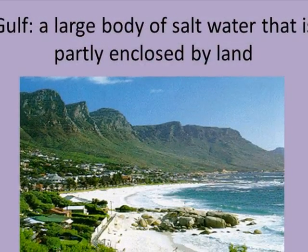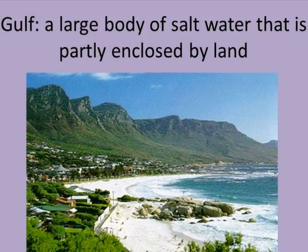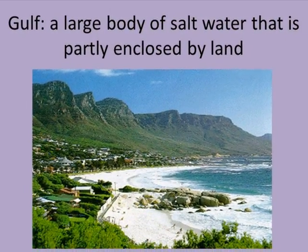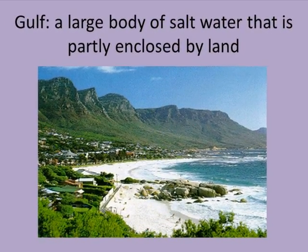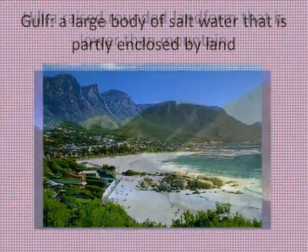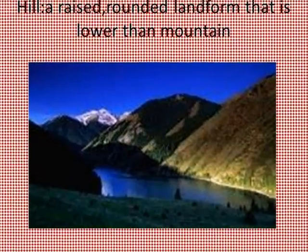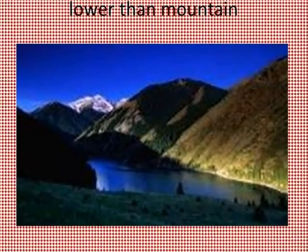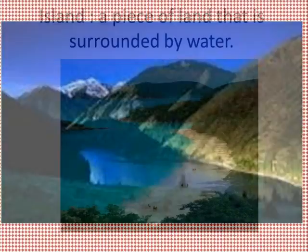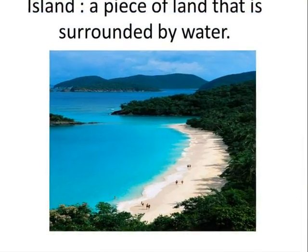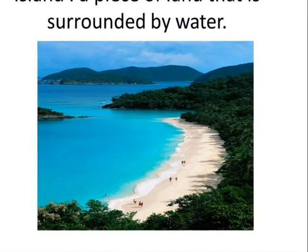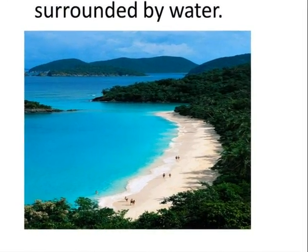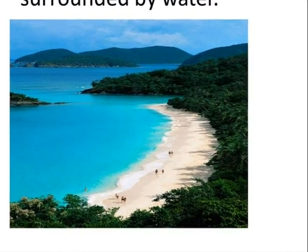A gulf is a large body of salt water that is partly enclosed by land. A hill is a raised rounded landform that is lower than a mountain. An island is a piece of land that is surrounded by water.